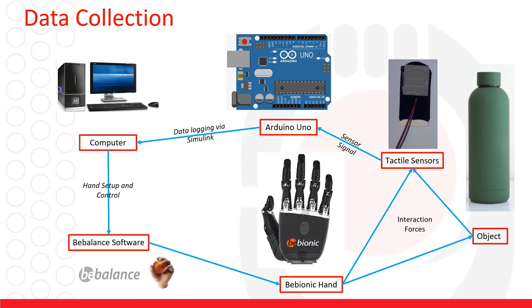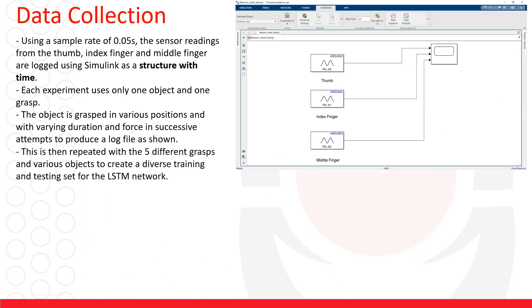This is the setup that we use for data collection where we perform multiple grasping experiments and we log the data from each experiment using Simulink and we save it as a structure with time at a sample rate of 0.05 seconds.